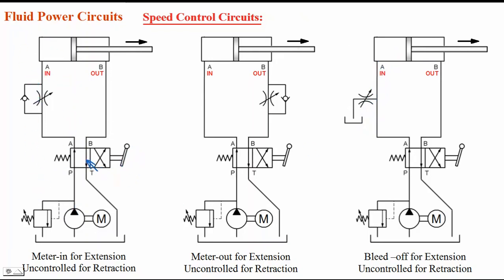In the first circuit, when the lever of the valve is kept in the first position, P to A and B to T connection is made. Oil flows from pump to the head-end port of the cylinder through the flow control valve — the flow is regulated, so oil going into the cylinder is controlled. That is why it is meter-in control for extension. When we keep the lever in the other position, P to B and A to T connection is made. Oil flows to the rod-end port, the cylinder retracts, and oil on the other side flows through the check valve back to tank — free flow, so retraction speed is not controlled.